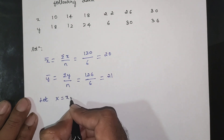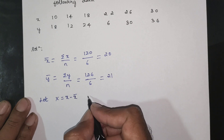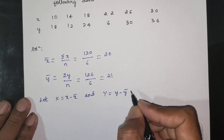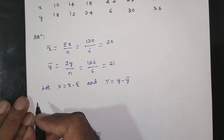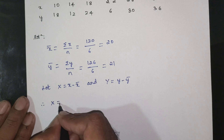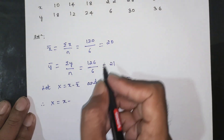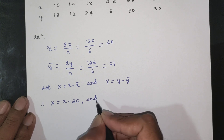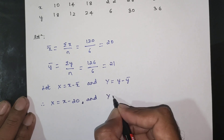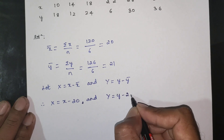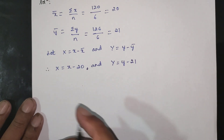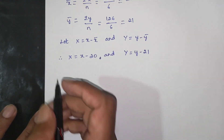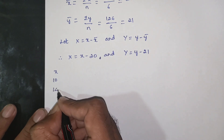Let capital X equal x minus x-bar, and capital Y equal y minus y-bar. So X equals x minus x-bar (which is 20), and Y equals y minus y-bar (which is 21).